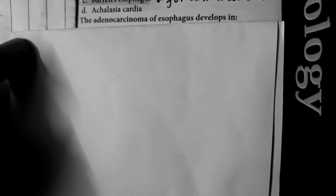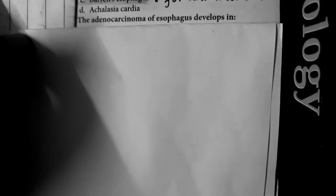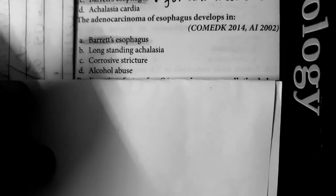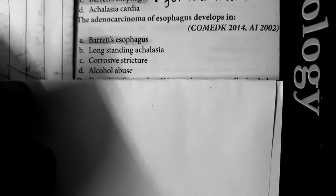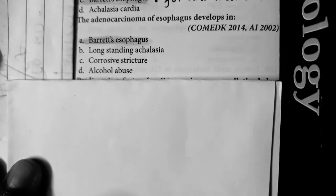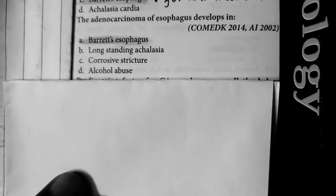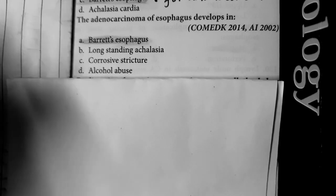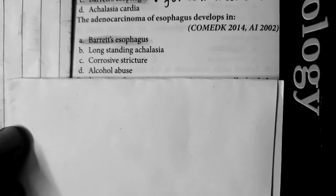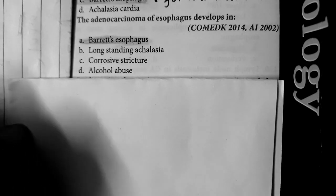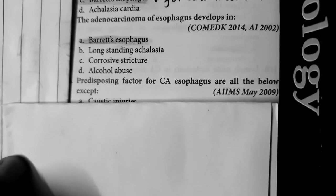Question number 7: Adenocarcinoma of esophagus develops in Barrett's esophagus, because Barrett's esophagus is the risk factor for adenocarcinoma of esophagus. Others, like long-standing achalasia, corrosive strictures, and alcoholic abuse, are risk factors of squamous cell carcinoma of esophagus.